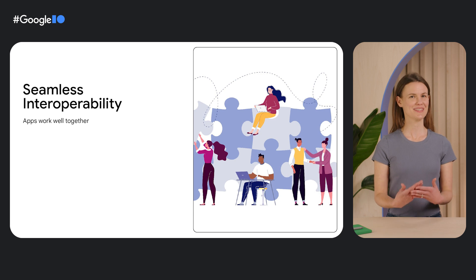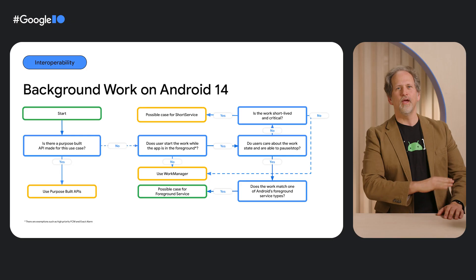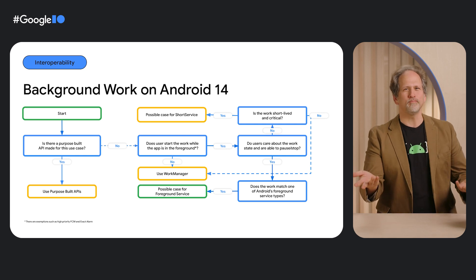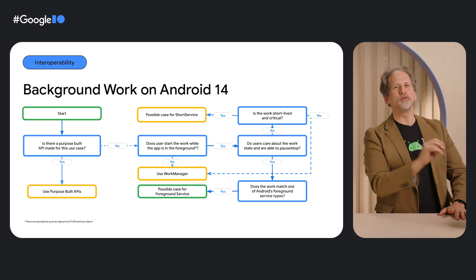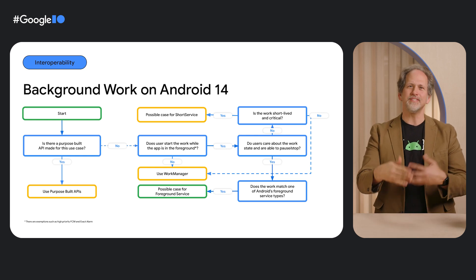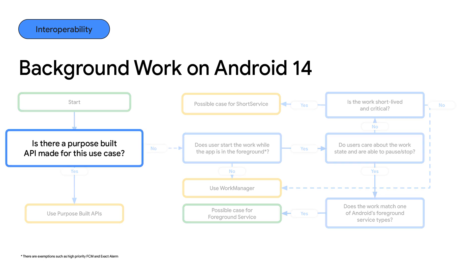Making apps work well together involves how they share resources, how you can move data between them, and much more. So let's talk about the future of running stuff in the background. We have this super simple flow chart that could help visualize when you can and should use different methods of running work in the background. It's not inclusive of every use case. First, check to see if there's a purpose-built API for your use case, and use those when possible.